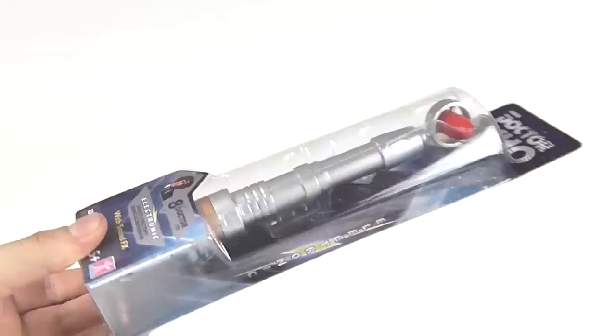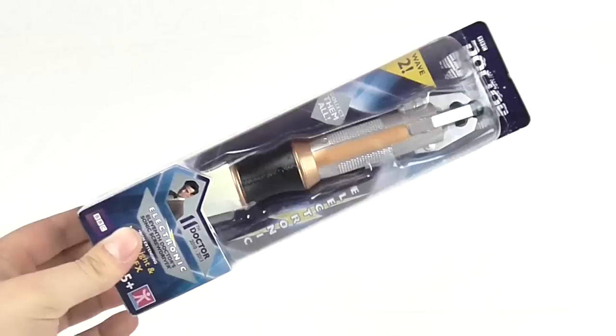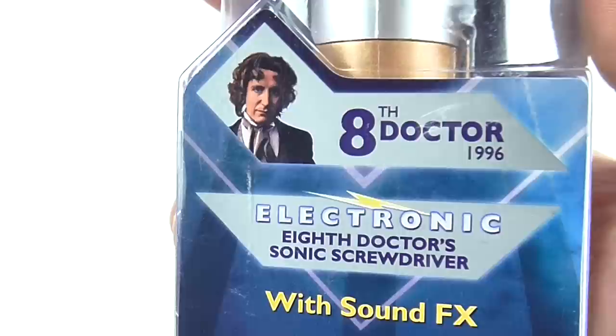The packaging is just the same as the Wave 1 toys with the classic logo on the top, a big viewing window which gives you a good look at the toy when it's in its packaging, and for the most part they do look good, except for 11s which just looks as though it's been crammed in there.